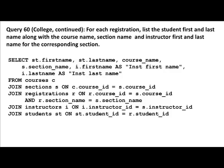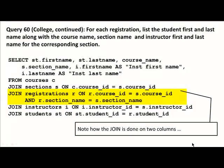So putting all that together, first take a look at the joins. Because there are no outer joins, the order of the tables does not really matter. We have registrations, sections, courses, instructors, and students, and each one has been given an alias. The important thing is how registrations and sections are joined: JOIN registrations r ON r.courseID = s.courseID AND r.sectionname = s.sectionname. This is something we have not seen before — having AND in the join condition. This may be required when you are joining tables on multiple columns.